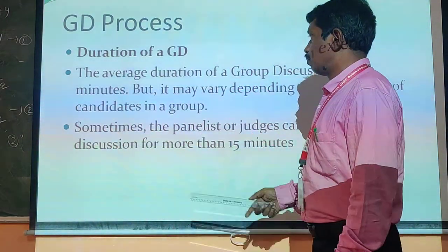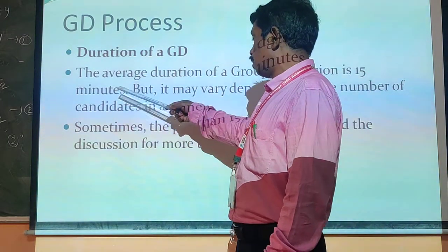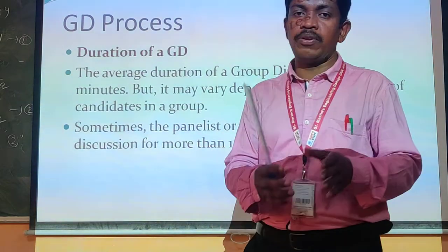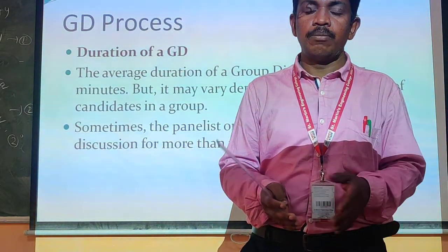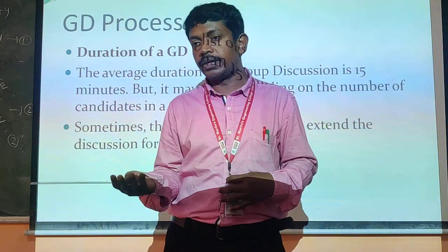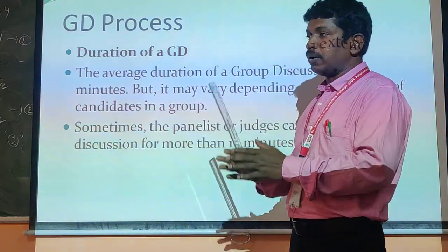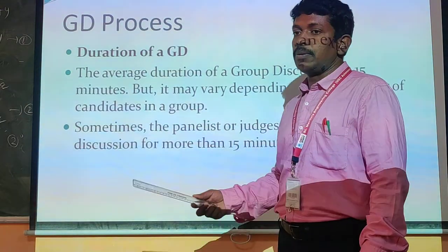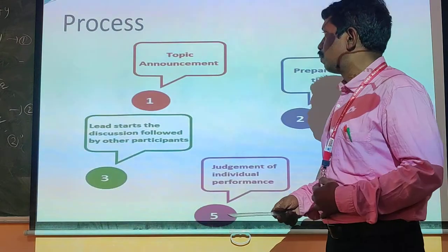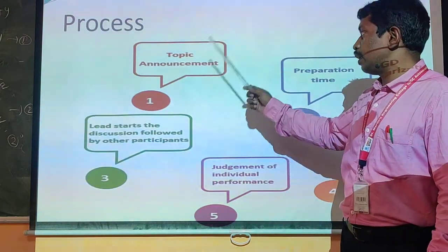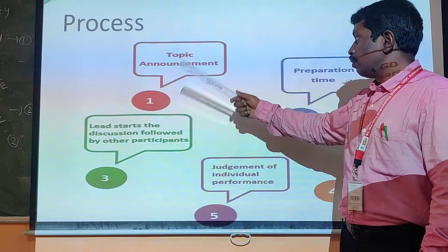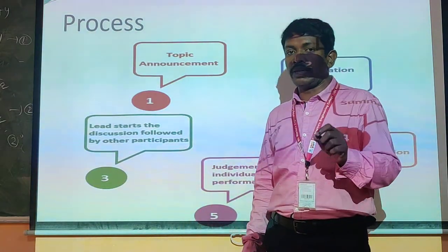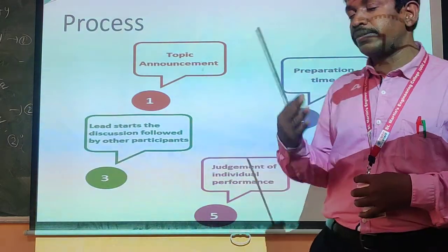The minimum is more than 5. The average duration of GD is 15 minutes, but it may vary depending on the number of candidates in a group. There is no specific time — it may exceed based on the topic, circumstances, and candidates' interaction. Sometimes the panelists can extend the time to 15 or 20 minutes depending on the topic and students. The mentor will give a topic announcement, assign a topic, and then give preparation time of 3 to 4 minutes. Based on the topic, students have to note down important points and discuss what the topic is.